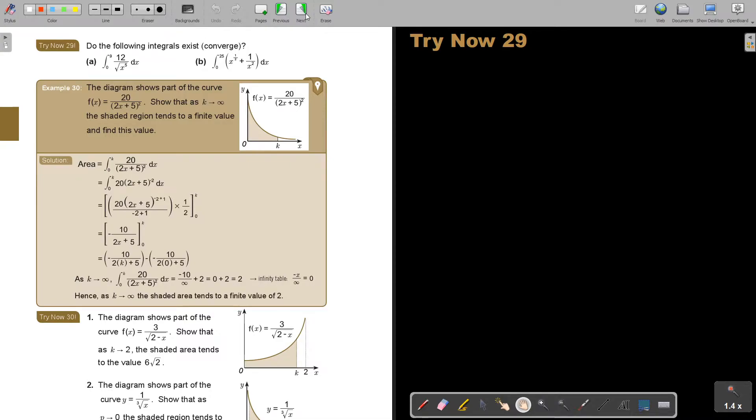I want you to stop the video, and I want you to do Try Now 29, number B. You can continue the video as soon as you are finished. That's the integral from 0 to 25 of x to the power of a half plus 1 over x squared dx.